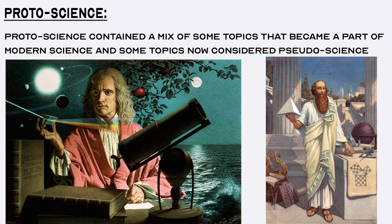There are some concepts from the proto-sciences of alchemy, astrology, numerology, metaphysics, and natural philosophy from ancient times which became part of the modern sciences of chemistry, astronomy, mathematics, and physics respectively. Then there are concepts from those same proto-sciences that are now considered pseudoscience. For example, the Greek mathematician Pythagoras dealt heavily with numerology but is also credited with concepts used in modern mathematics. The English scientist Isaac Newton dealt heavily with alchemy but is also credited with concepts used in physics today. The Royal Society is considered the world's oldest national scientific institution, but it had its inception as the Invisible College, a group of proto-science natural philosophers with connections to esoteric organizations like the Rosicrucians.